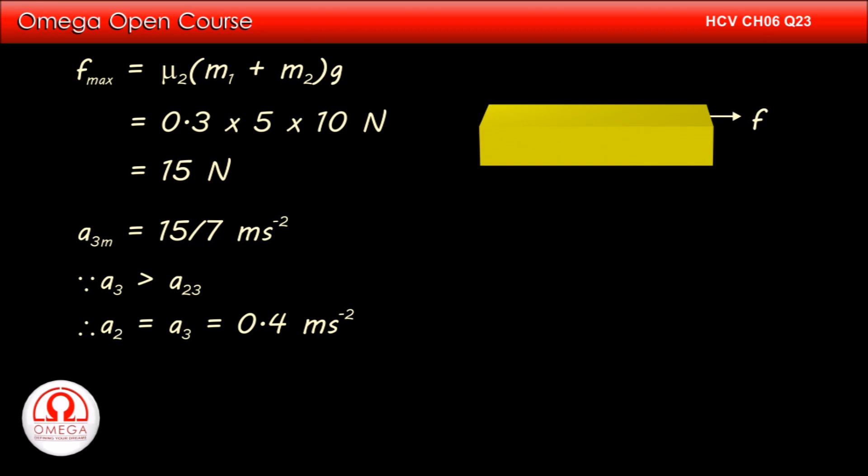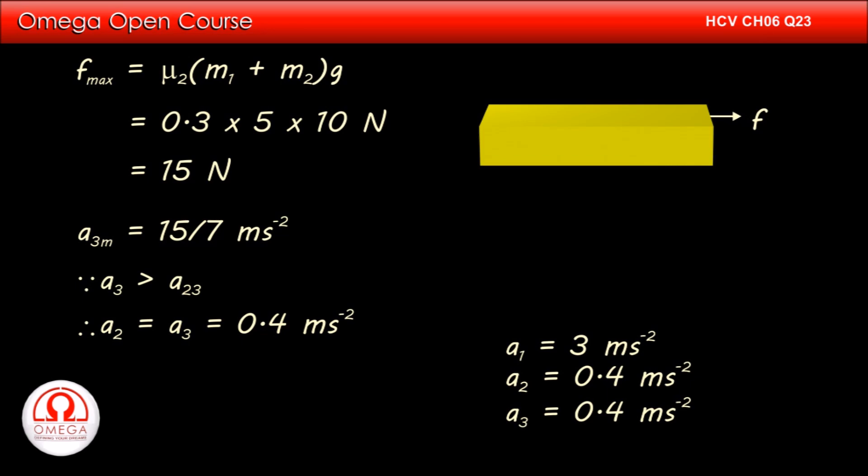Thus, if 10N force is applied to the uppermost block, the uppermost block moves with acceleration 3 meters per second square and the bottom two blocks move with acceleration 0.4 meters per second square. This is the answer to part A of the question.